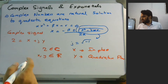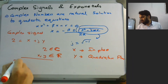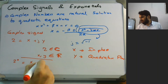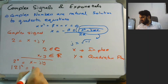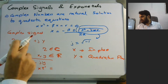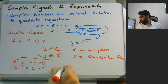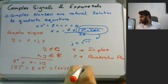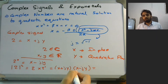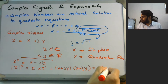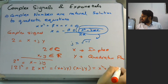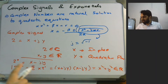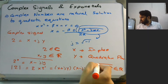Let us look into some fundamental properties. If we take the conjugate of z, that would be x minus j y. If we take the squared magnitude of z, that is z multiplied by z conjugate, we get x plus j y times x minus j y, which gives us x squared plus y squared. This means the squared magnitude of a complex number gives us a real number.